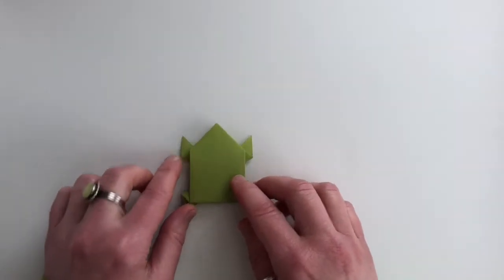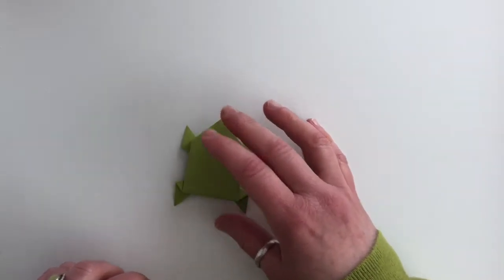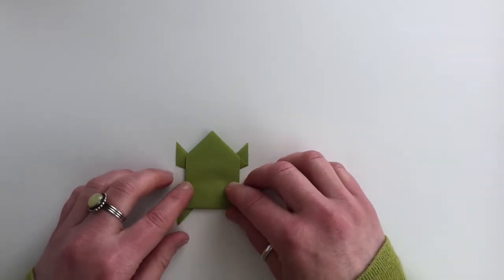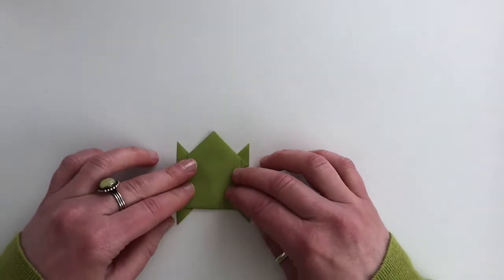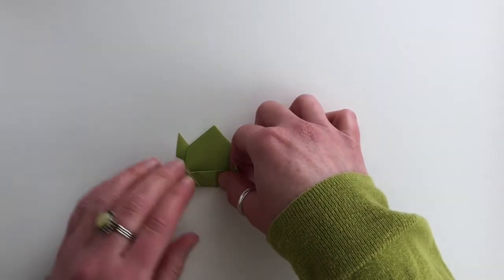We can flip him over. He looks kind of cute, but he doesn't hop much yet. So to make him hop, we're going to turn his body into a zigzag shape. We're going to do that by folding up his back legs about half an inch.